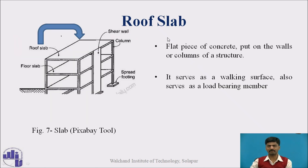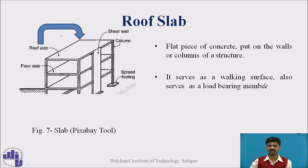Next is the roof slab — a flat piece of concrete placed on the walls or columns of a structure. You can observe this flat portion — this is your roof slab. In a G+1 or G+2 structure, the slab is present at each floor level, and at the top we provide the shelter, that is the roof. The main function of the roof slab is to serve as a walking surface or as a load bearing member.